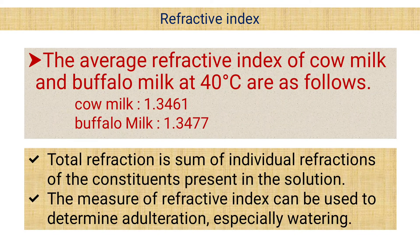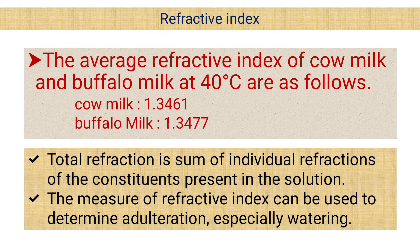The next property is the refractive index. The average refractive index of cow milk and buffalo milk at 40°C are as follows: cow milk is 1.3460 and buffalo milk is 1.3477. Total refraction is the sum of individual refractions of the constituents present in the solution. The measurement of refractive index can be used to determine adulteration, especially watering.